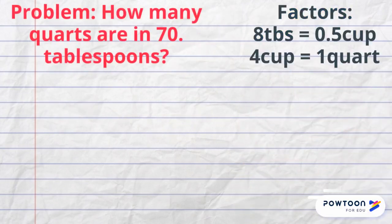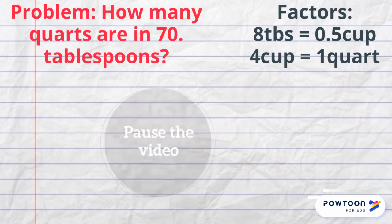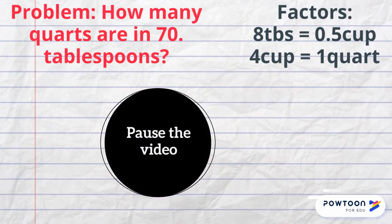Sometimes we have to use multiple factors. For this problem, you will have two factors. Eight tablespoons equals one half cup and four cups equals one quart. Pause the video and try this question on your own before viewing the answer. You will need to use both factors to solve the problem.